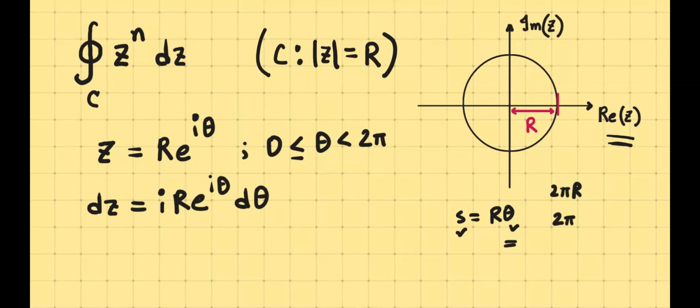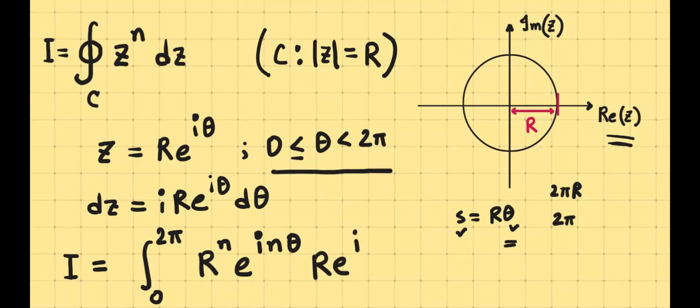If we substitute that into this integral, which we call to be I, then we defined I equals the integral. Now that the variable is going to be changed to the parameter theta, the limits of the integral needs to be changed accordingly. In this specific case, this is given to be the limit, so integrate from 0 radian to 2π radian. When you substitute z to the power n, you've found R to the power n, e to the power i n theta. After you substitute for z, there you'll find it's R times e to the power i theta times i times d theta.